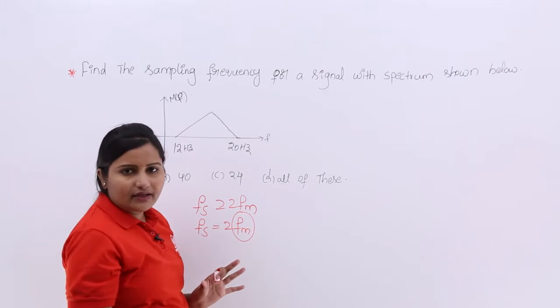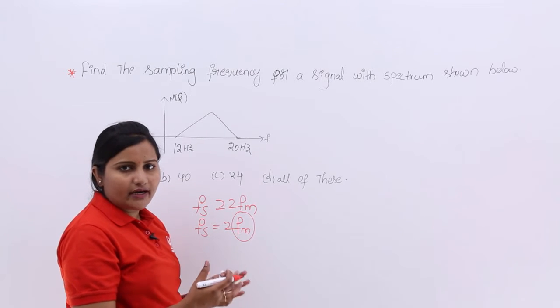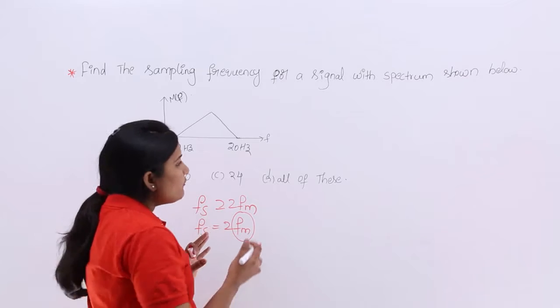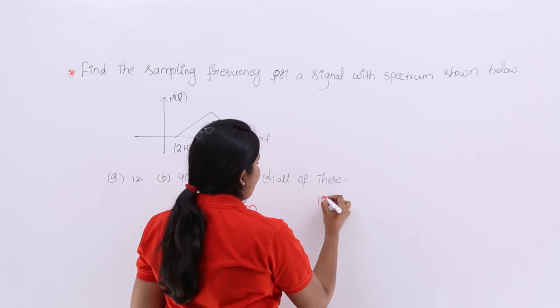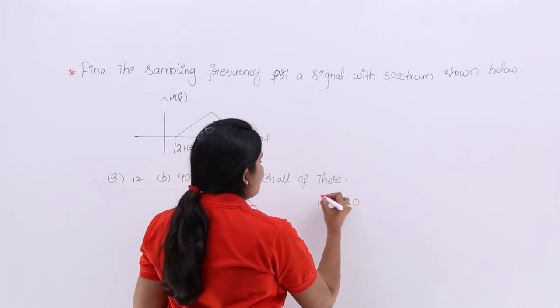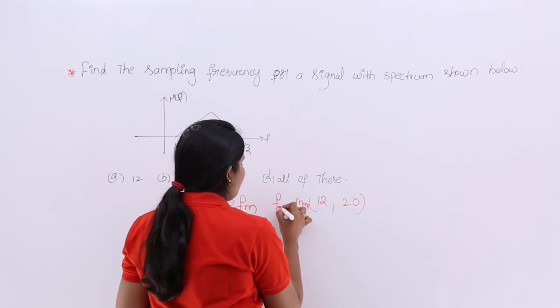But they did not give any fm value. That message frequency you need to find out now from this spectrum. From this spectrum the message is having two frequency components 12 and 20. The maximum of 12 and 20 will give you fm.